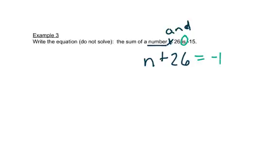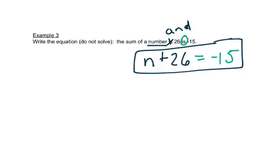Is means equals, so we'll have equals negative 15. It doesn't want us to solve it, it just wants us to set it up. So that's our answer: N plus 26 equals negative 15.